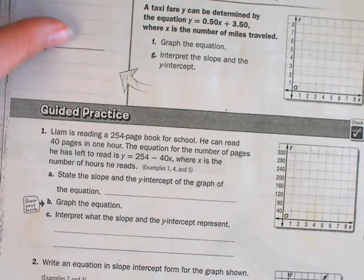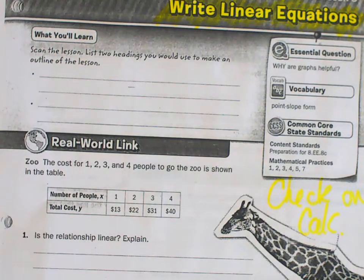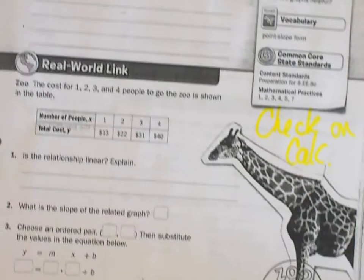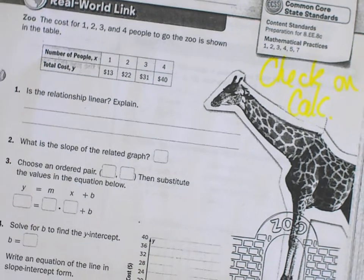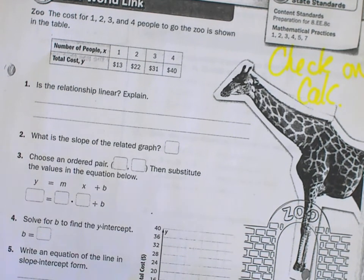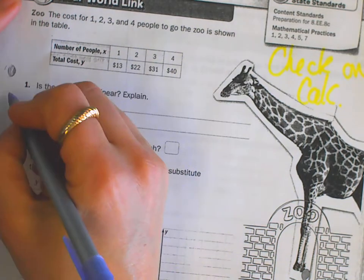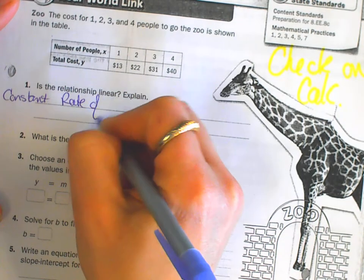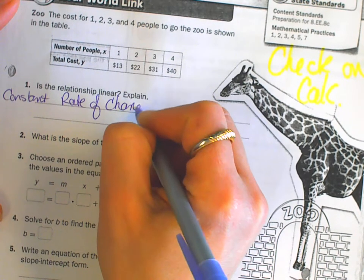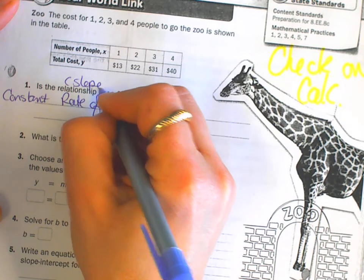Writing linear equations. This is a nice step-by-step process. Happens to start with a table, and then it asks you, is this relationship linear? If you remember from my other page, something is linear if it has a constant rate of change or a constant slope.